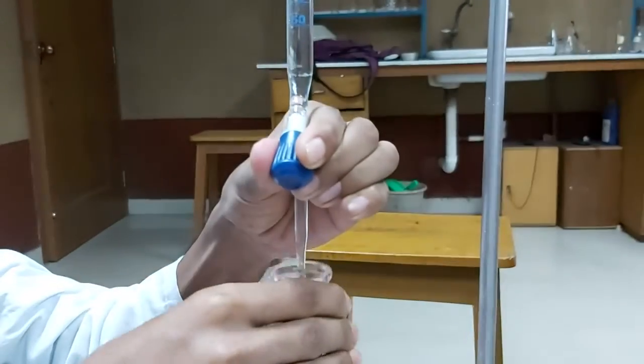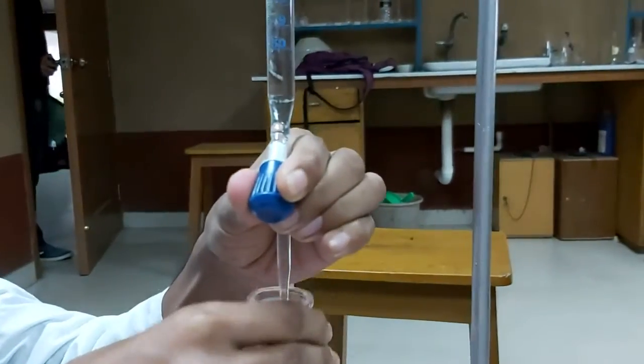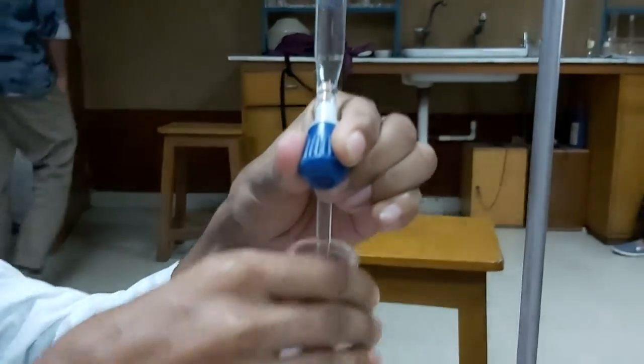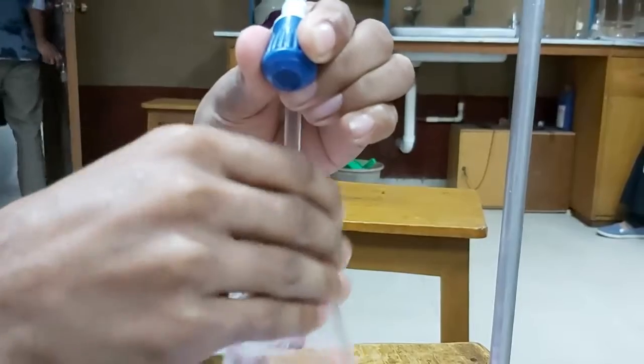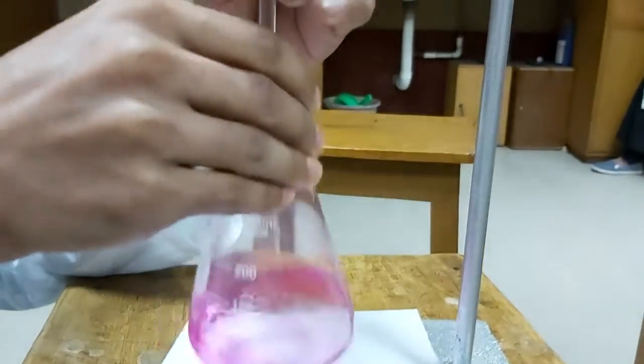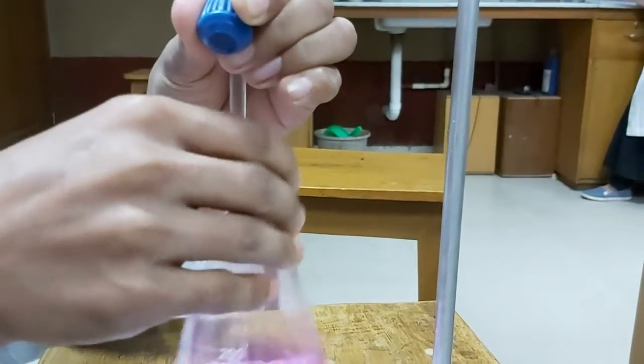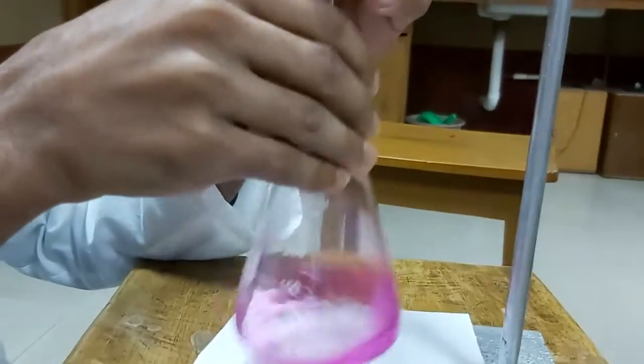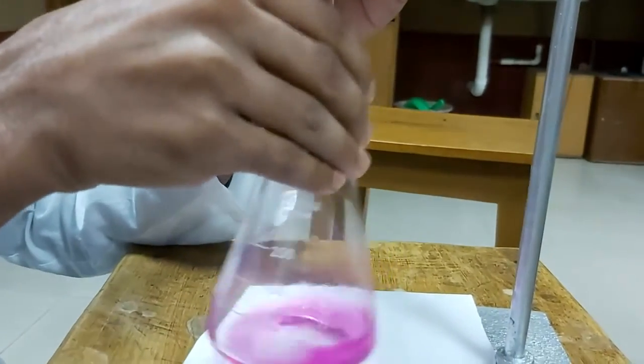The person titrating has taken his left hand on the knob of the burette and has taken the conical flask in his right hand. After addition of each drop of titrant to the analyte, he is shaking so that it can react.